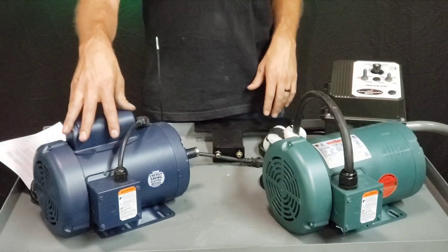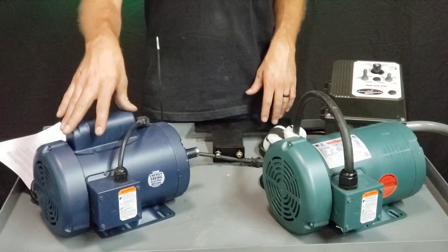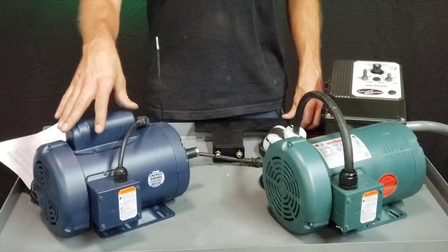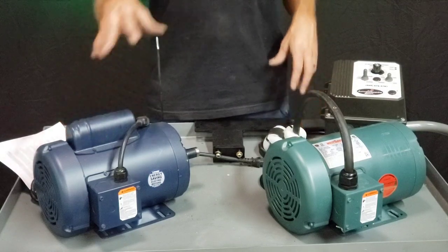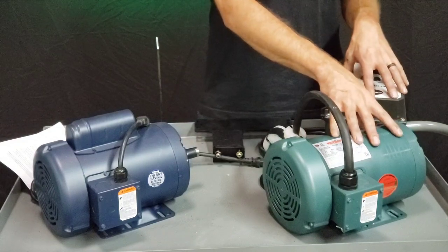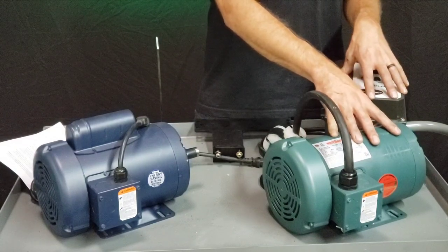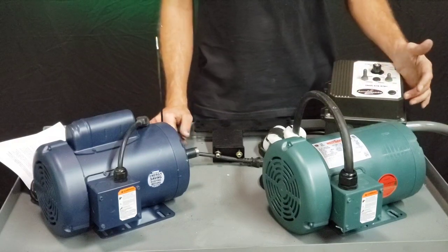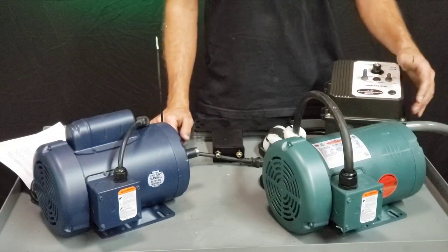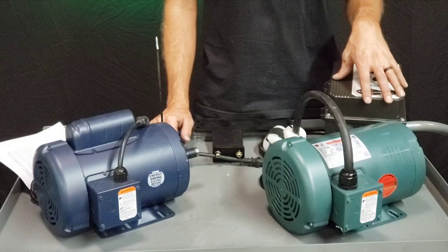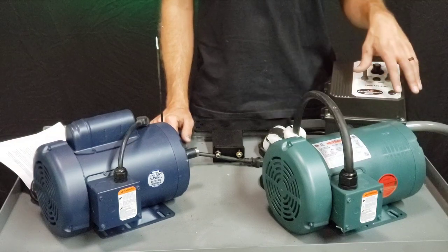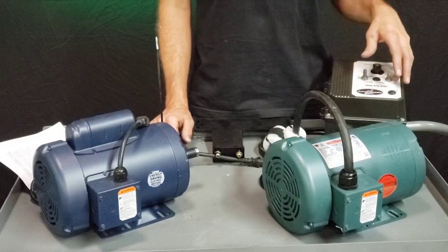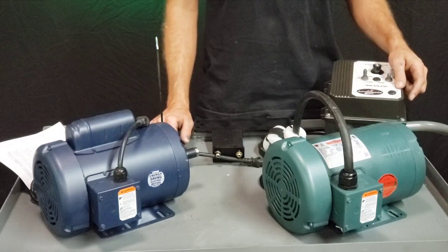With the single speeds, the three horsepower has to run on 220, and the one and a half horsepower is always wired for 110. But you have an option for the variable speed to get it wired for 110 or 220. The good thing about that is that you can always switch it later. You can get it wired for 110 volt now. It'll come with a standard NEMA 515 plug, so you can plug it into any outlet. The only downside is that you'll only get one and a half horsepower out of it.